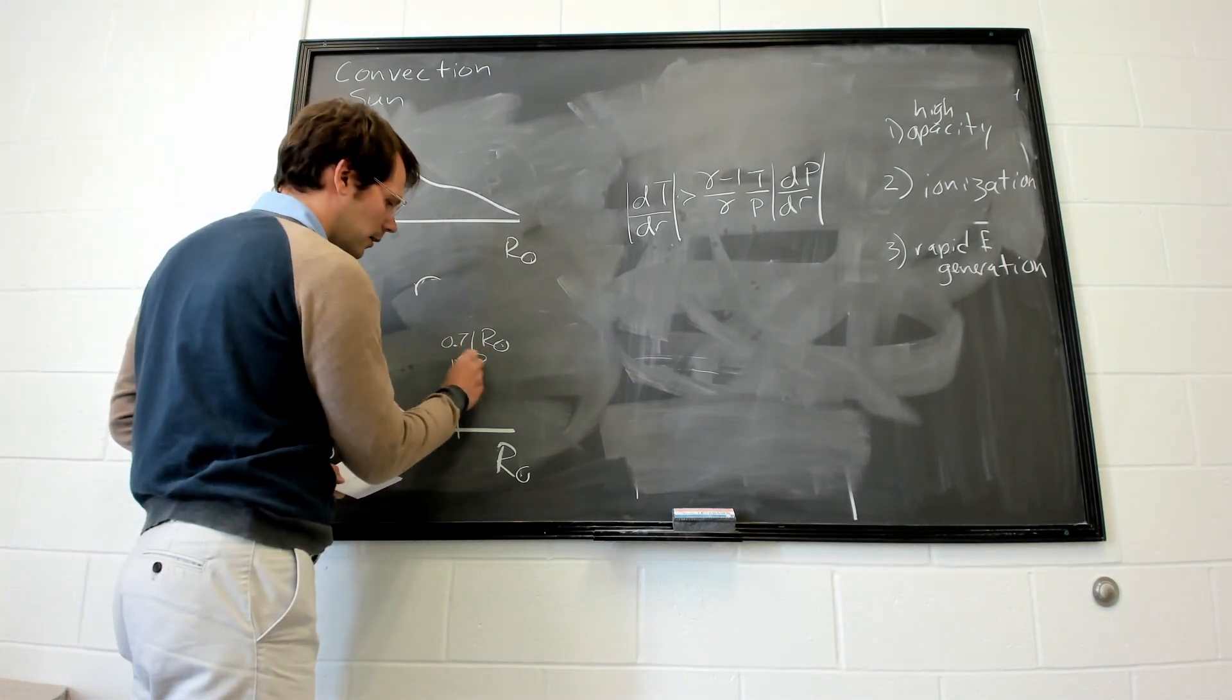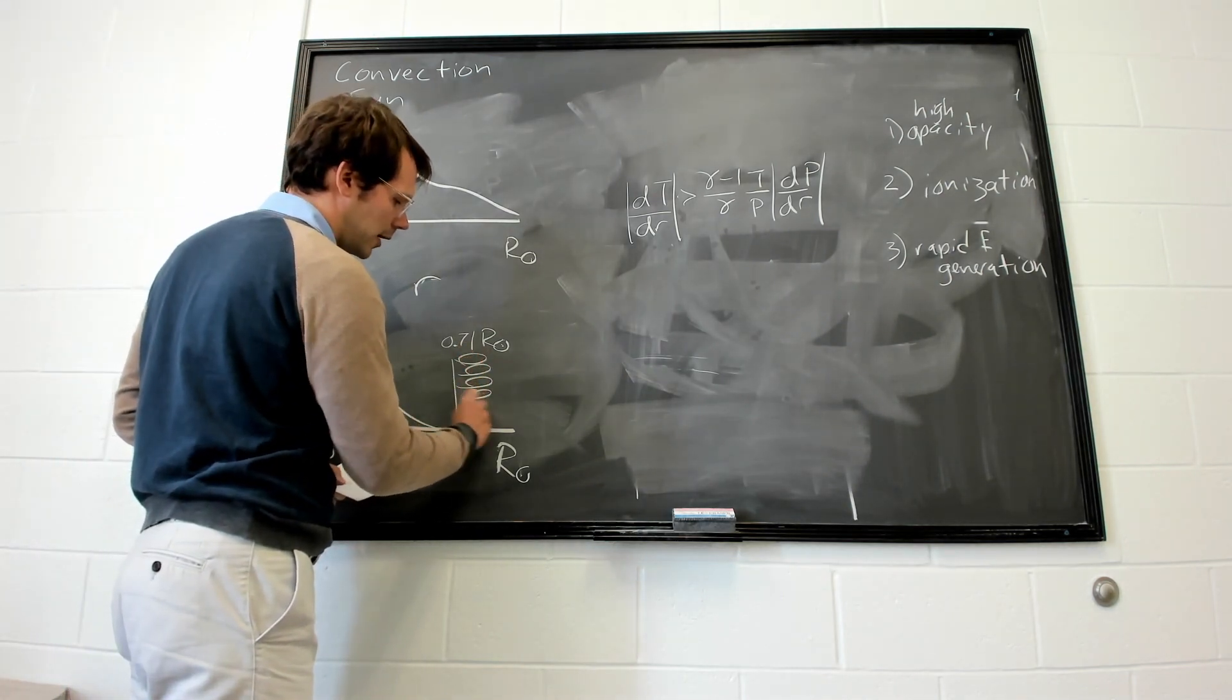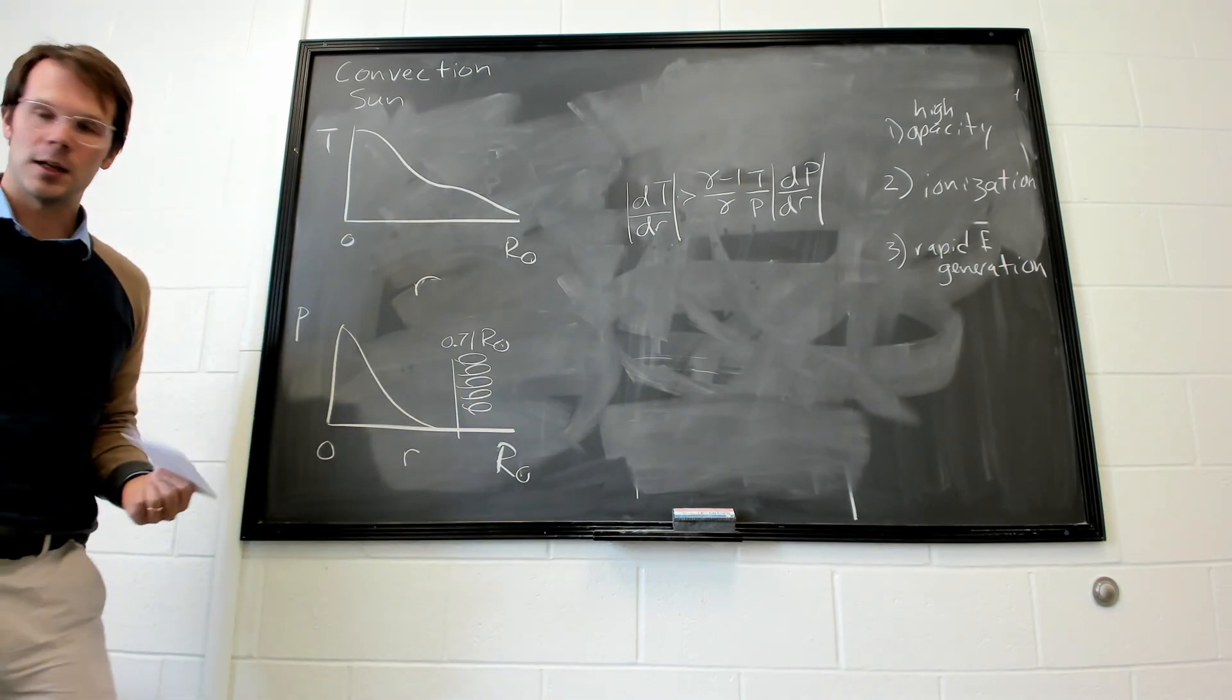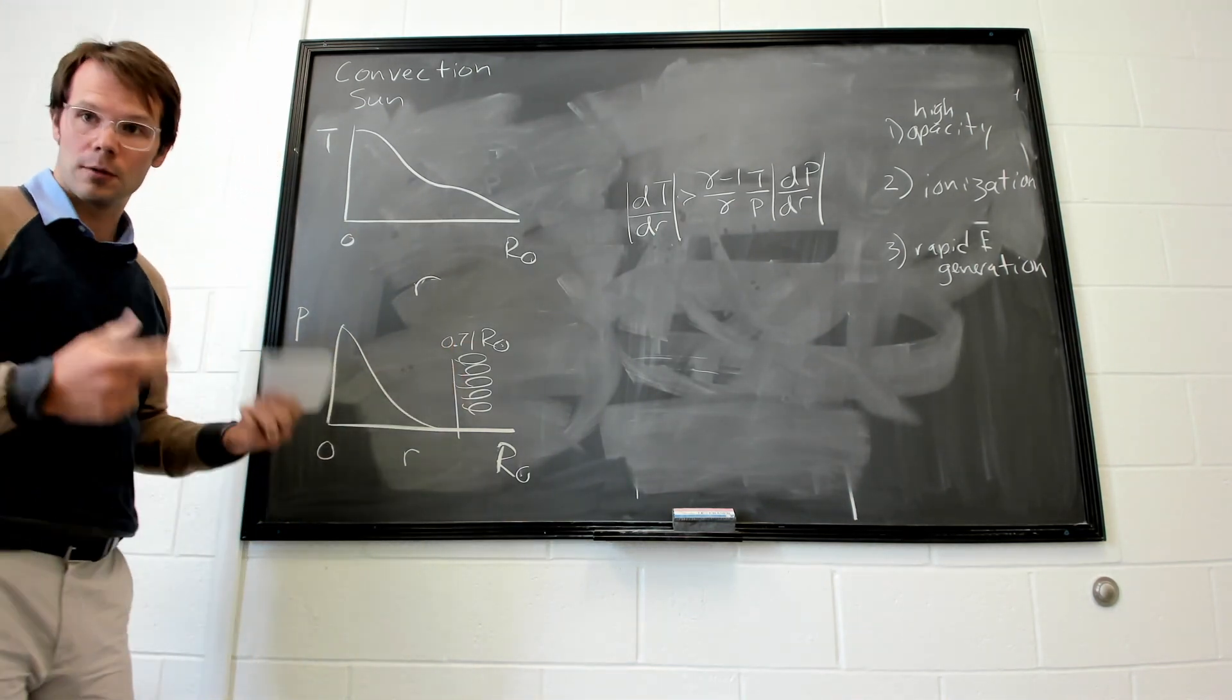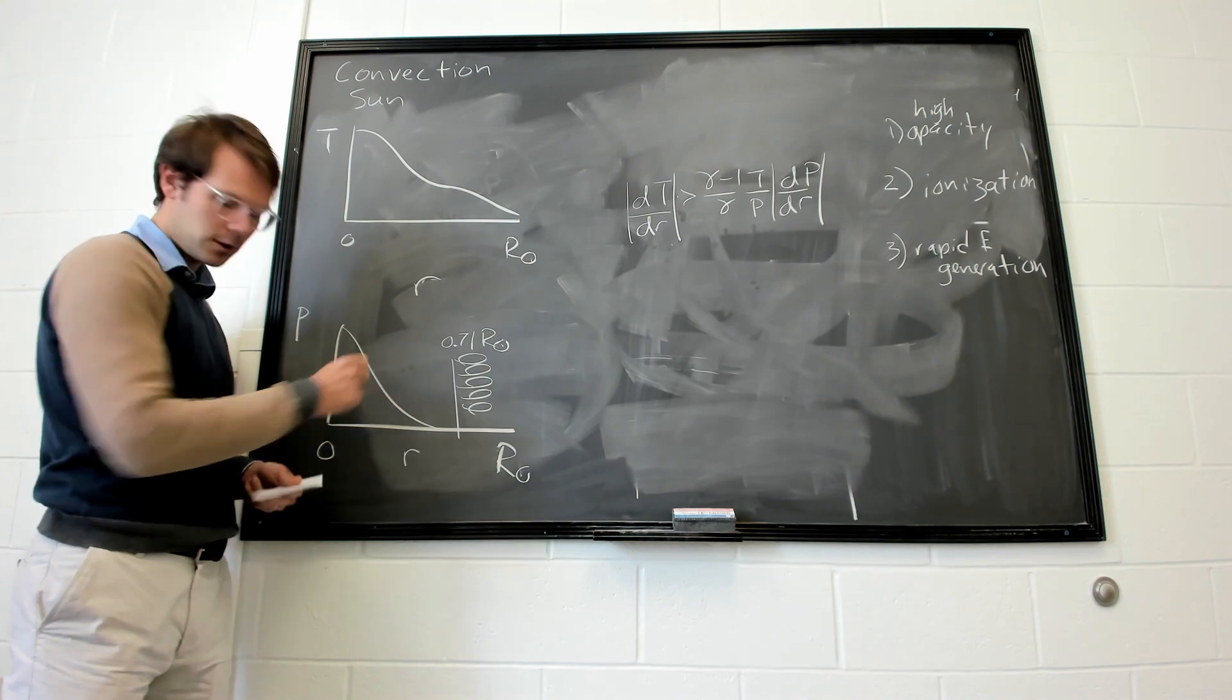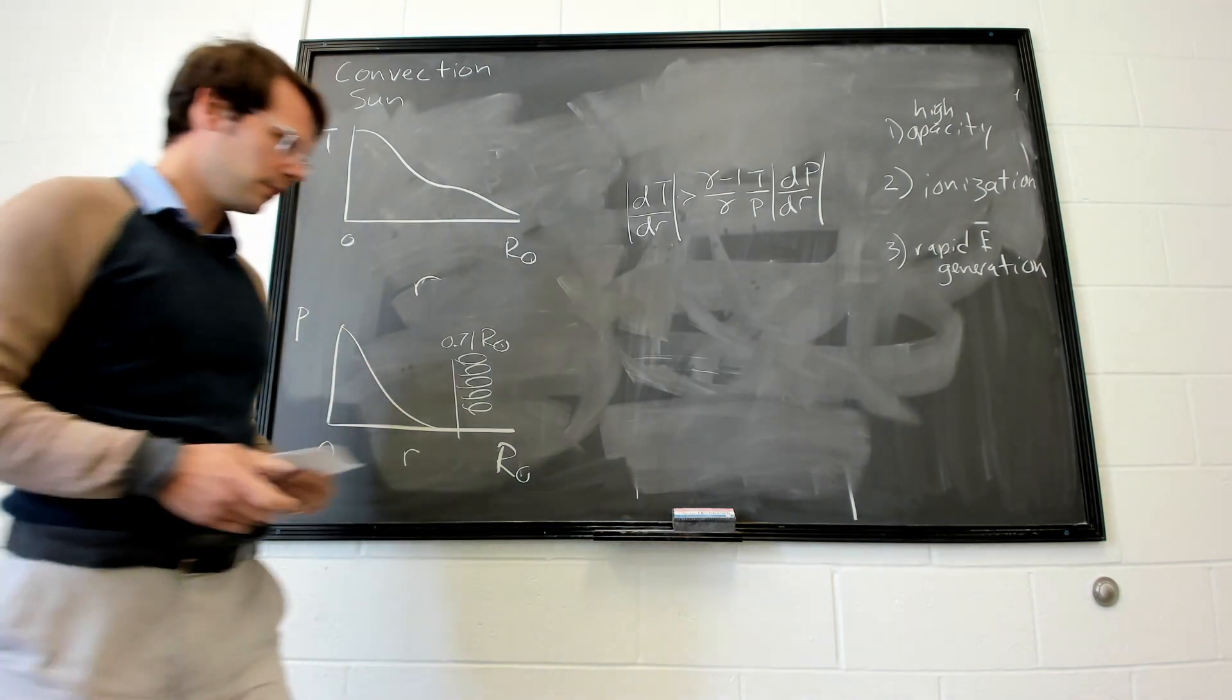So the material at a larger radius from this is unstable to convection, and energy is transported throughout the star generally through convection. Interior, it's usually transported via radiation.